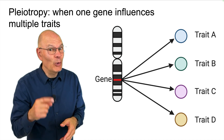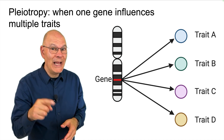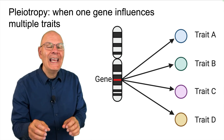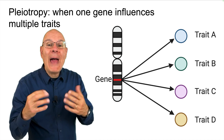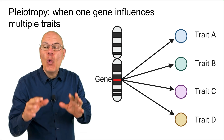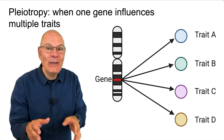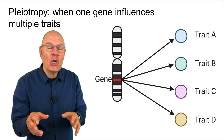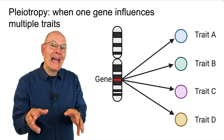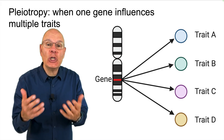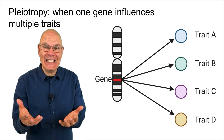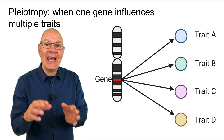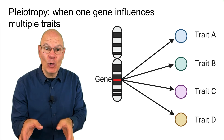Pleiotropy, which you will also hear pronounced as pleiotropy, is a pattern of inheritance in which one gene influences multiple traits. We're going to look at it in the context of two human diseases: sickle cell anemia and cystic fibrosis.